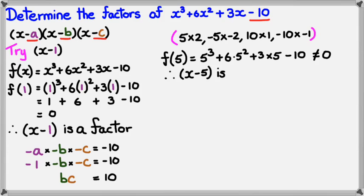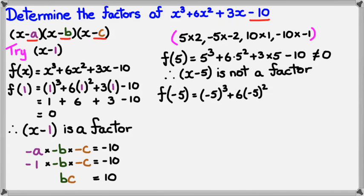So x-5 is not a factor. Obviously, the next one I'm going to try is f(-5). So in this case, I've got (-5)^3 + 6(-5)^2 + 3(-5) - 10.